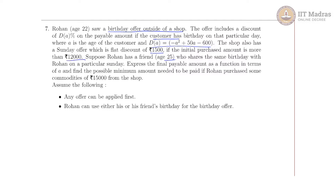Suppose Rohan has a friend whose age is 25, who shares the same birthday with Rohan on a particular Sunday — so both friends have their birthday on that Sunday. We need to express the final payable amount as a function in terms of A, and find the possible minimum amount to be paid if Rohan purchased commodities worth 15,000. Either offer can be applied first, and Rohan can use his own or his friend's birthday.